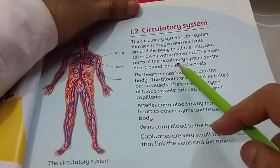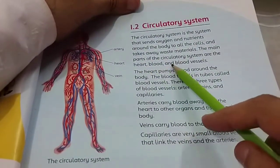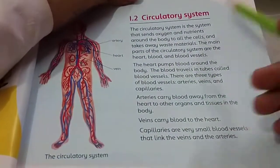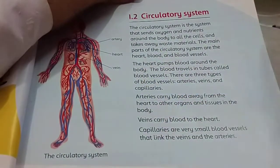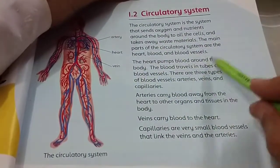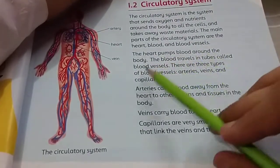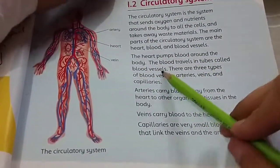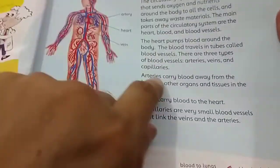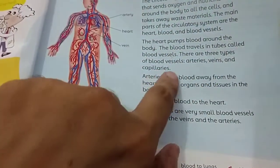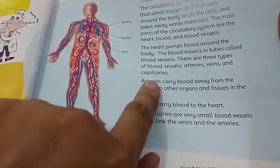The main parts of the circulatory system are the heart, blood, and blood vessels. The function of the heart is to pump blood around the body. The blood travels in tubes called blood vessels. There are three types of blood vessels: arteries, veins, and capillaries.